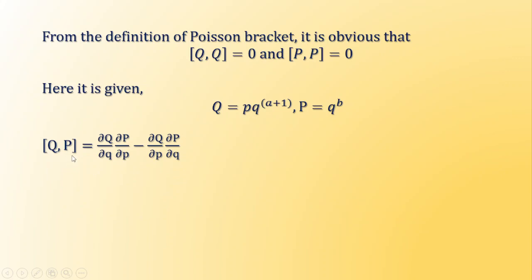We know from the fundamentals of Poisson bracket that [Q,P] = (∂Q/∂q)(∂P/∂p) - (∂Q/∂p)(∂P/∂q). Now what is ∂Q/∂q? We have to differentiate this with respect to q. What do we get?